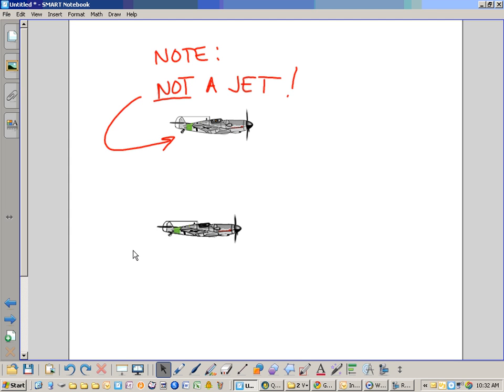All right, so we are doing problem number, what is it, 12? Yeah. All right, which deals with a jet on a catapult on, I guess, an aircraft carrier. No, this is not a jet. It's being used just for purposes of illustration.